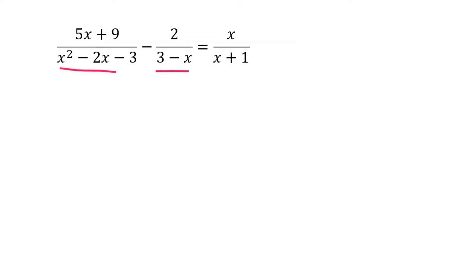We need to make sure all the denominators are factorized first. This one is not factorized over here, and so we'll have to do that first. So we'll say 5x plus 9 over. Now that one can factorize really easily as x minus 3 and x plus 1.